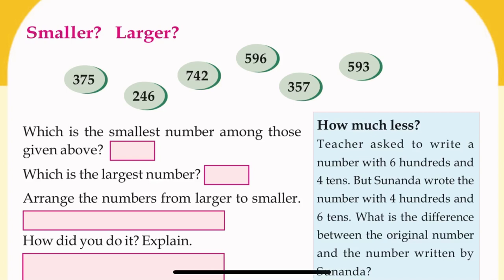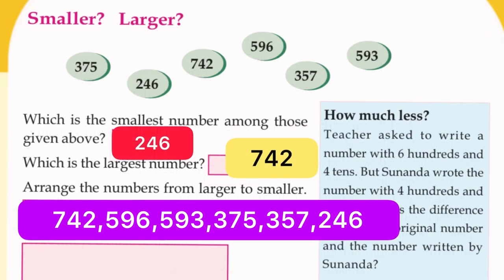First question: which is the smallest number among those given above? 246 is the smallest number. And which is the largest number? 742. Arrange the numbers from larger to smaller.